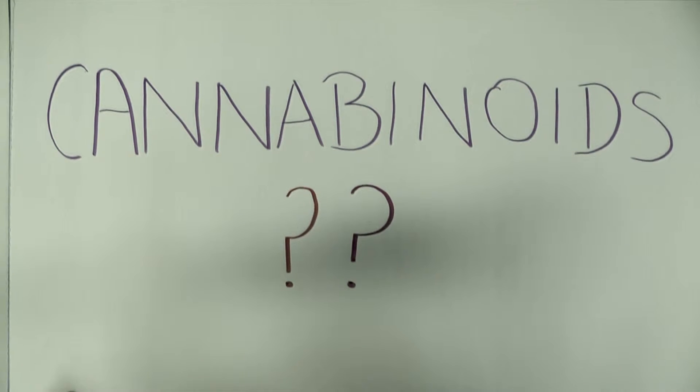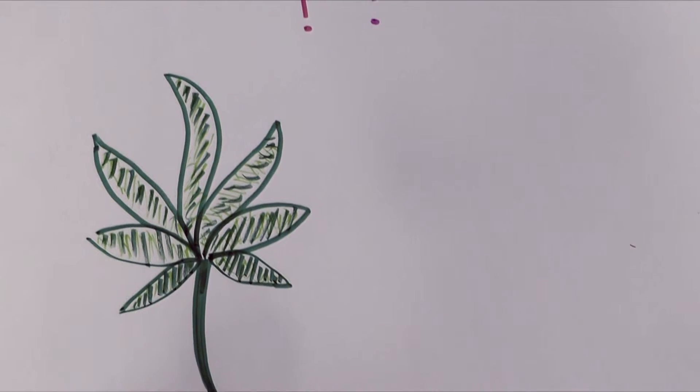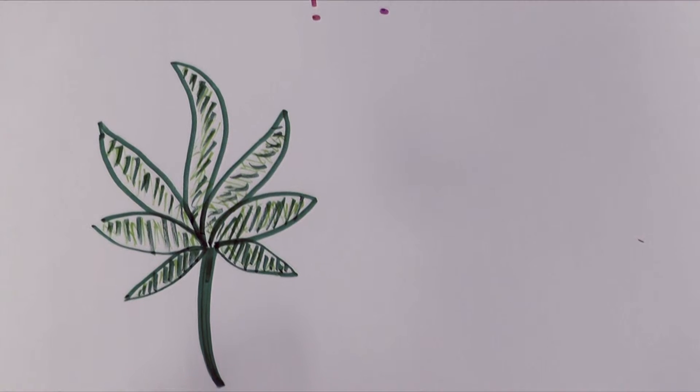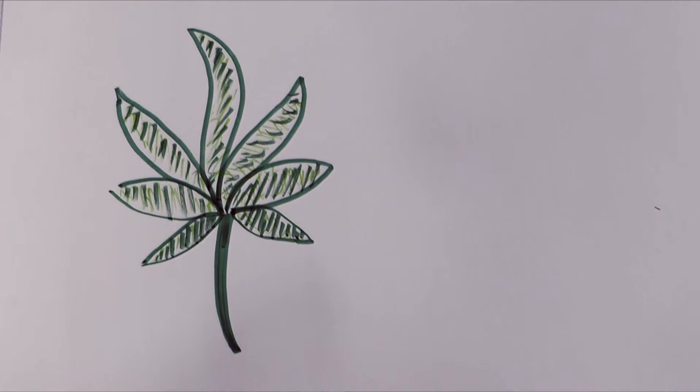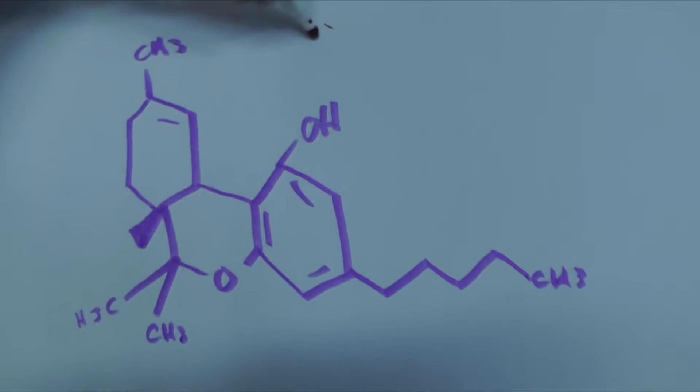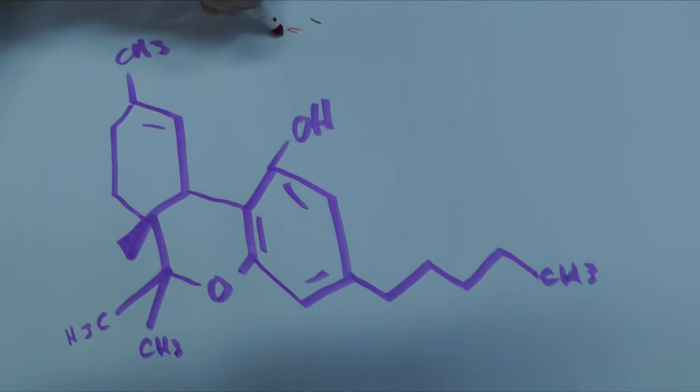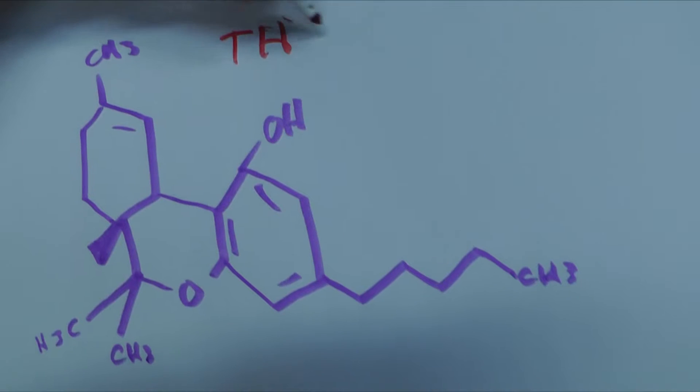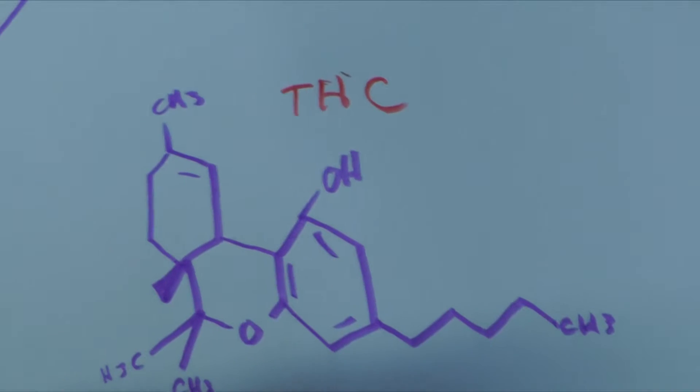Cannabinoids have been found to have an immunosuppressive effect in models of inflammation and neurodegeneration. But what are cannabinoids exactly? Well, in the plant cannabis sativa, the main component is called THC which is associated with the psychoactive components of cannabis.